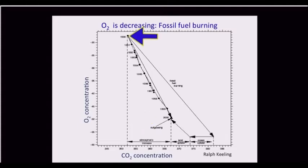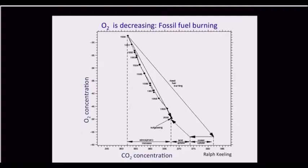This line here is the line you'd expect for burning fossil fuel, because fossil fuel consumes one oxygen molecule for pretty much every carbon atom that's burned. I think the ratio is actually like 1.4 to 1 or something. Anyway, what this tells us is that the amount...